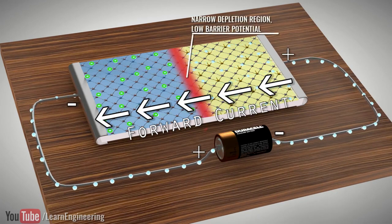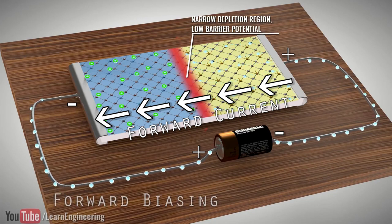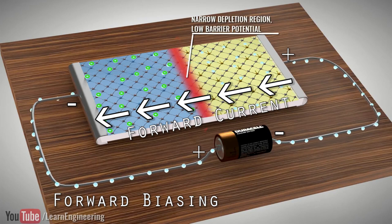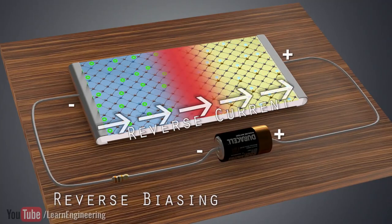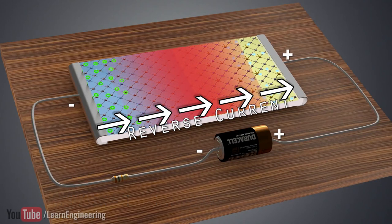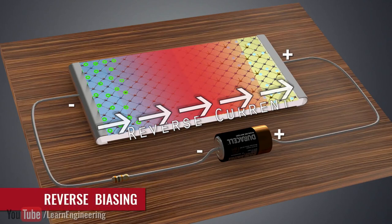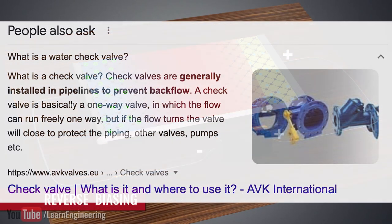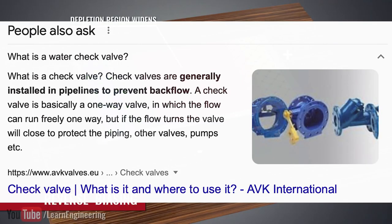They represent pretty much exactly what they sound like. Forward biasing means the more the current flows forward, the less resistance the diode will create. In contrast, if the current tries to reverse, there is a bias in the circuit that prevents the current from going in the other direction. Reverse bias. It's the electrical equivalent of a one-way valve in a water system, which is often called the check valve.